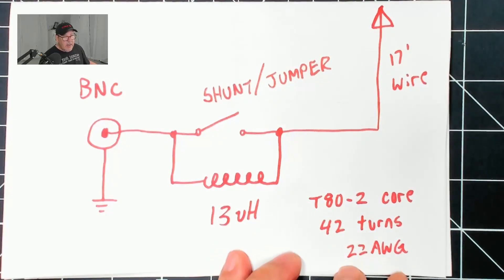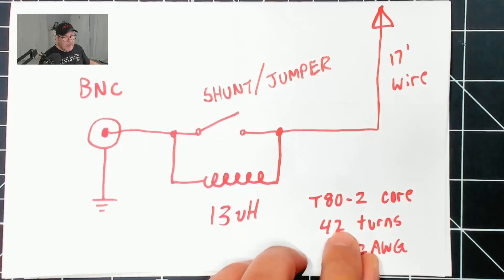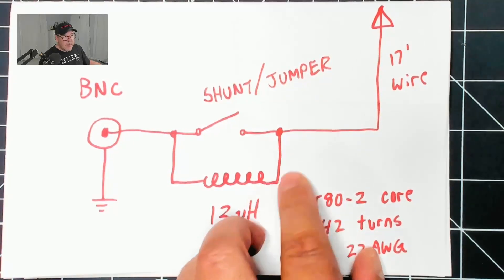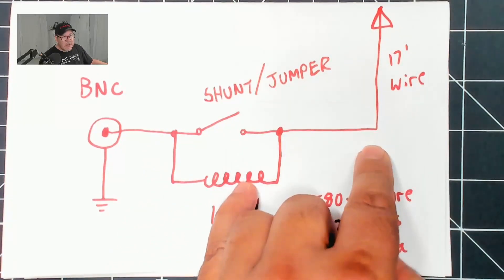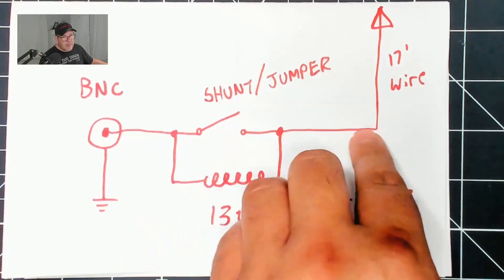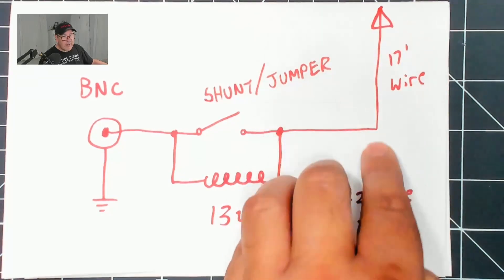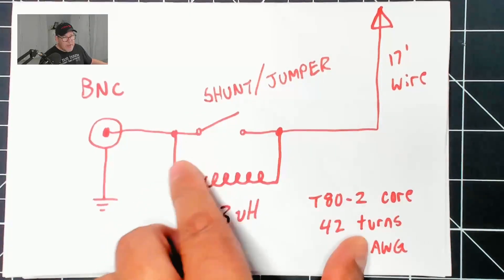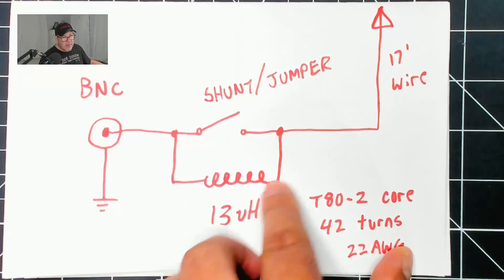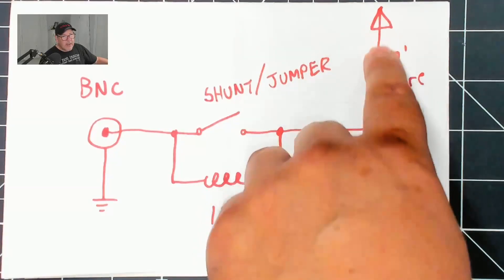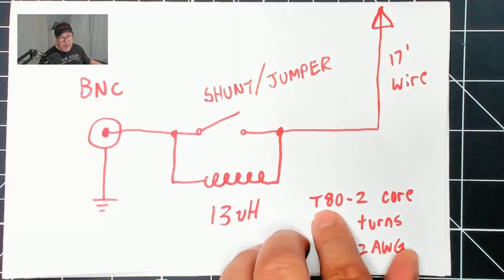You're gonna probably need to vary this between 40 and 42 depending on the overall length. Basically set this first for your 20 meter operation with the shunt in place. Adjust the length of the wire, tune the antenna for 20 meters, and remove the shunt. The coil will come into play and you're going to use the coil to adjust for 40. You don't ever touch the length of the wire now that it's set for 20. Take windings or add windings to the coil for the adjustment for 40.